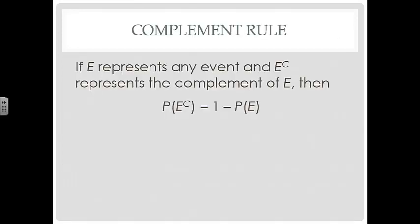Now let's look at the complement rule. If E represents any event, then E to the C represents the complement of E, and the probability of the complement equals 1 minus the probability of the event. We use the notation E superscript C. You might also see a bar over the E, but we avoid that to prevent confusion with the sample mean. Other notations include E-prime — an E with an apostrophe — or a tilde in front of the E. In this class, we will use E to the C.